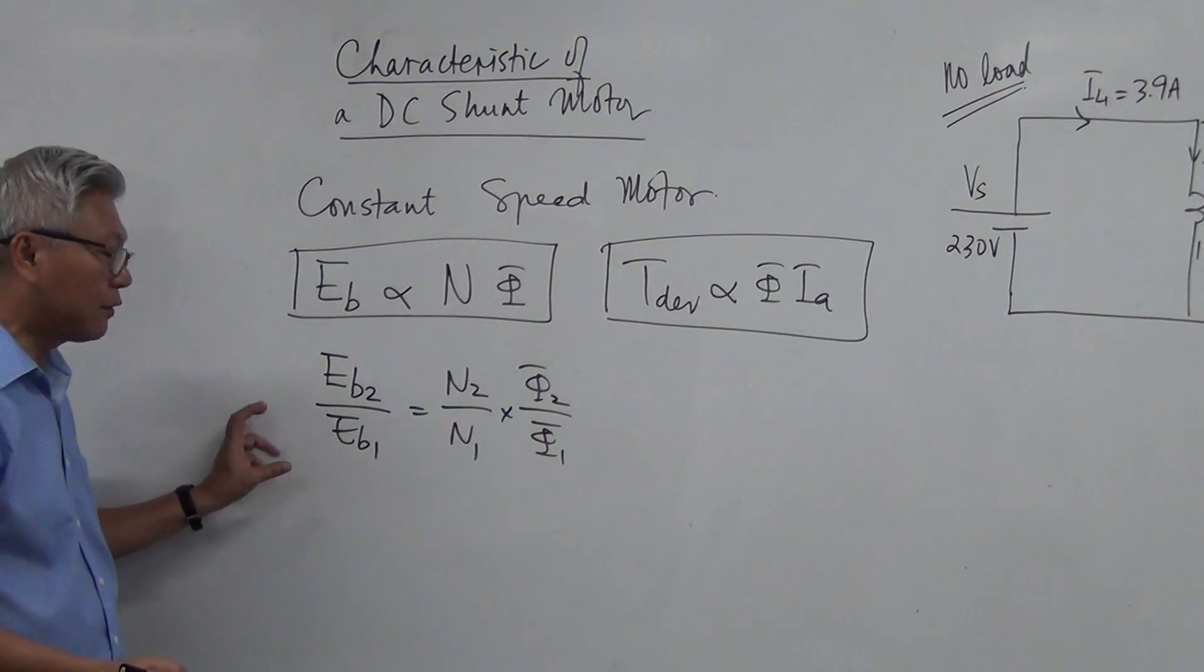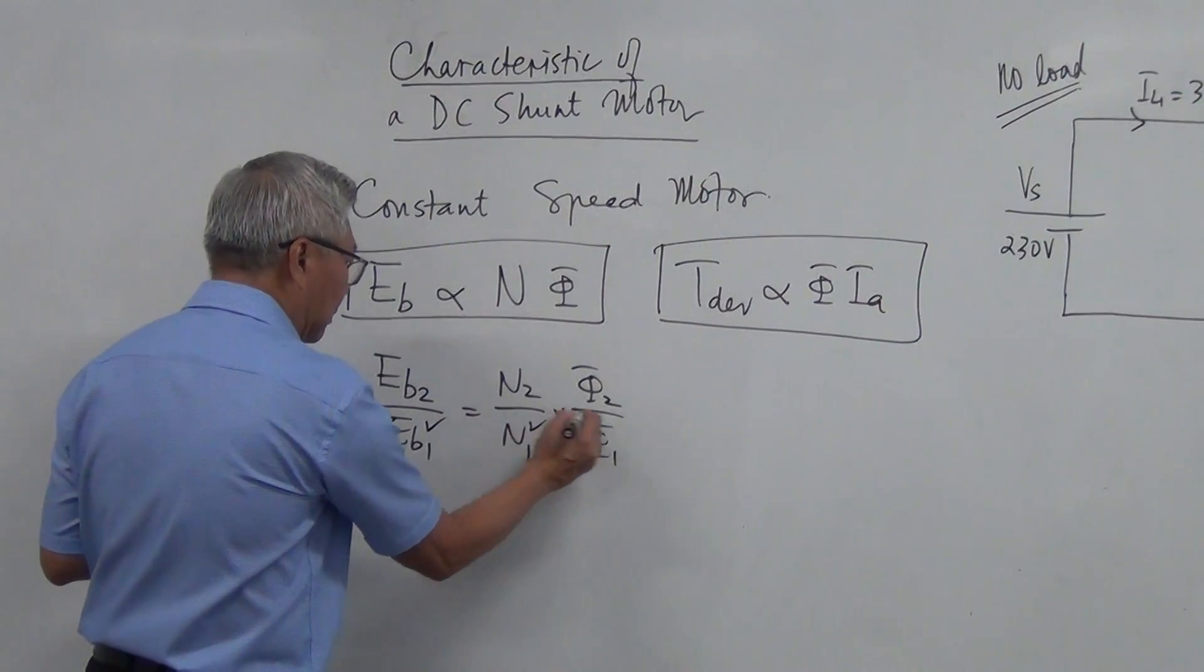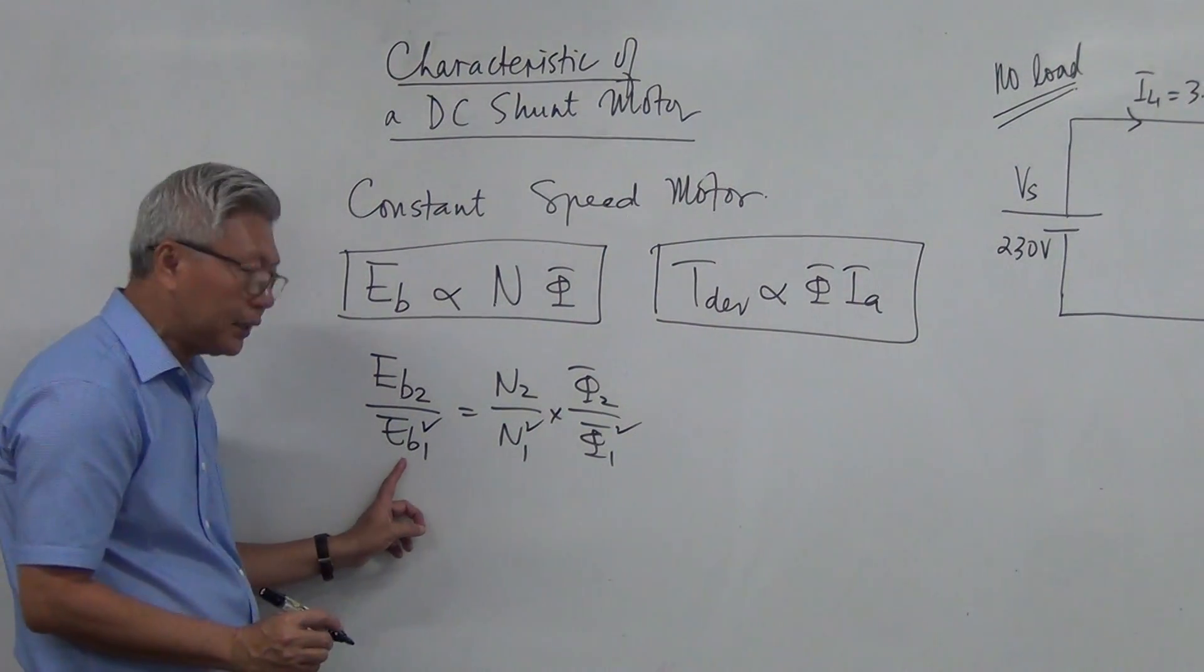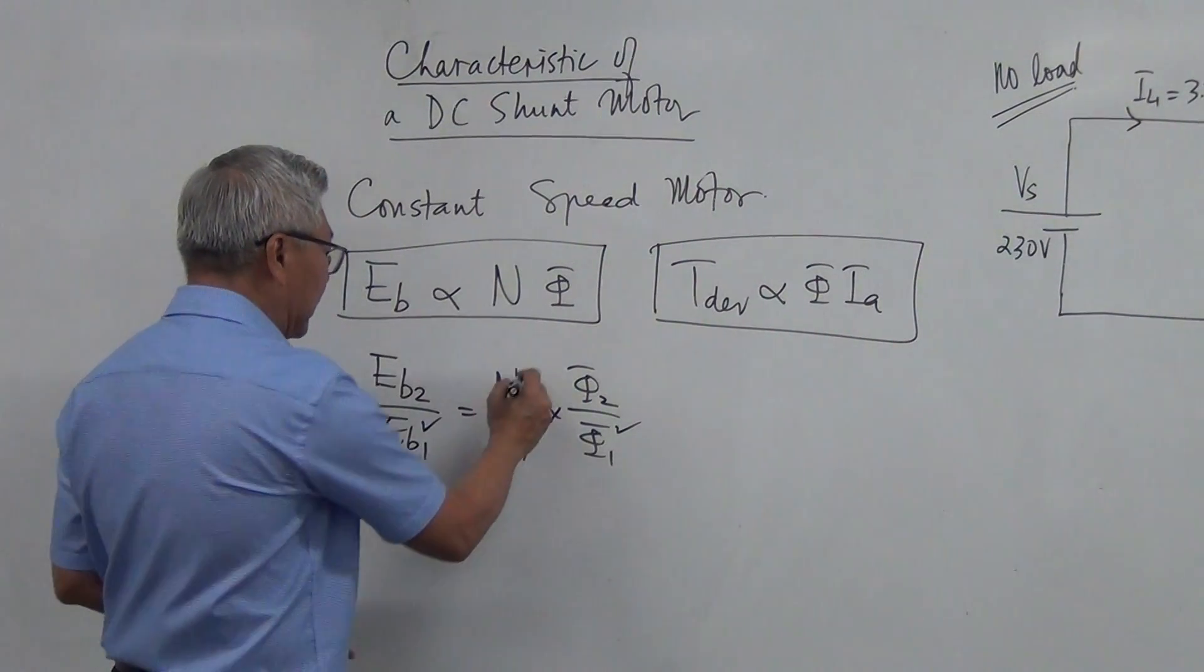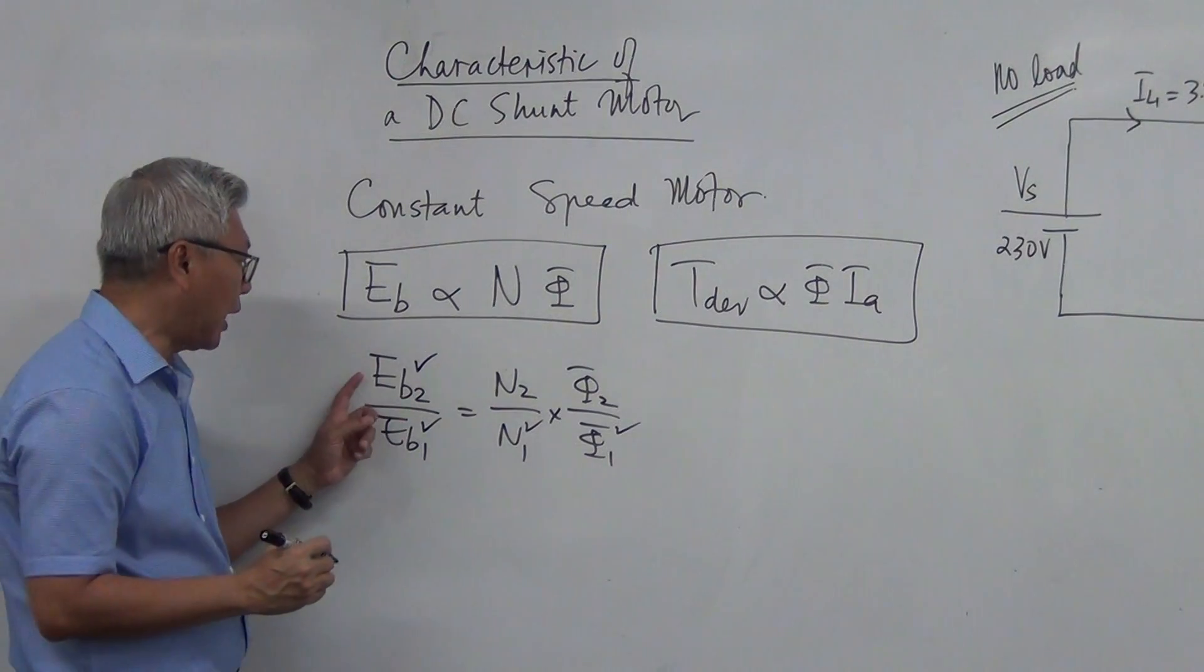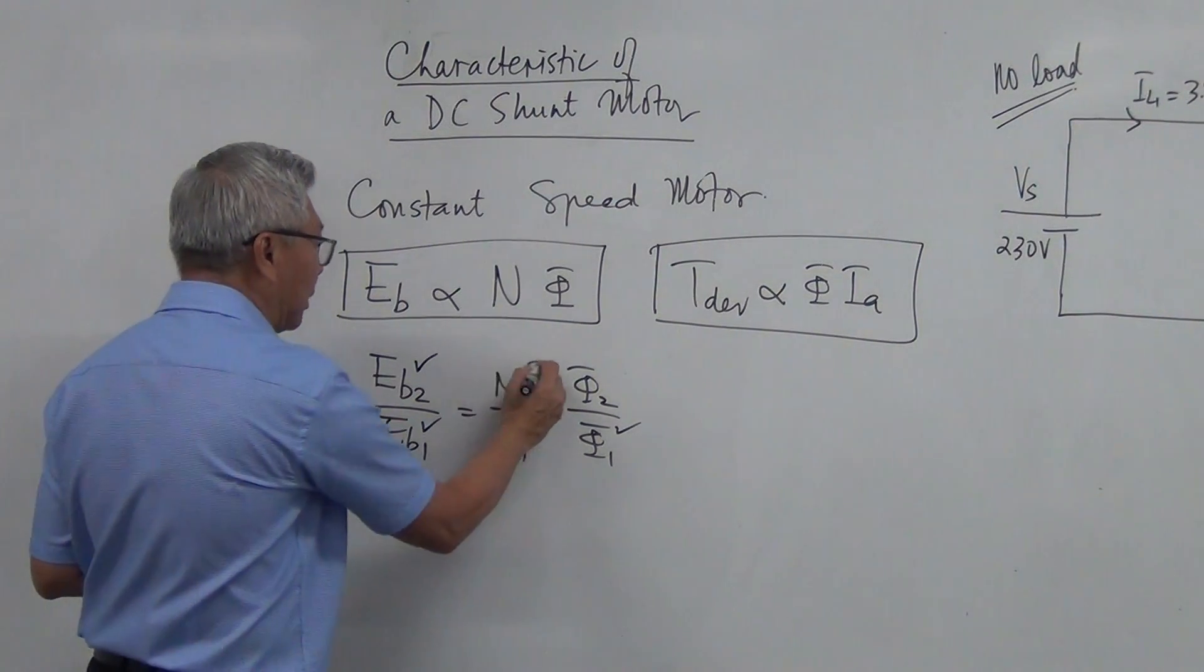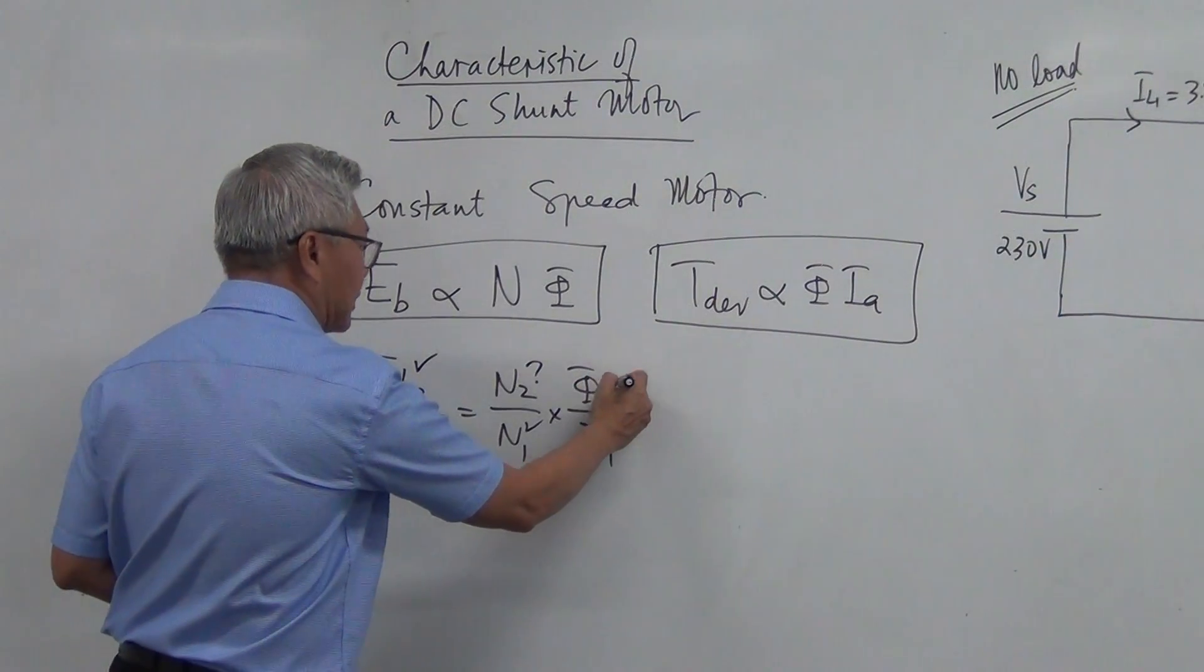So in other words, if I know my first situation at particular speed, if I know the back EMF, I know the magnetic flux, and at another speed, I would have another torque condition, I have another back EMF. I would be able to calculate the new speed if I know the new flux as well.